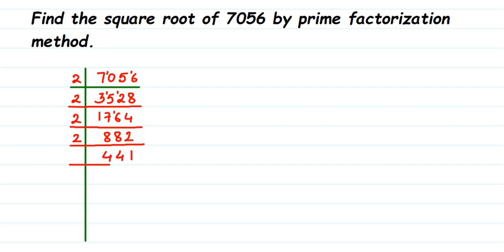Now 441 is an odd number, so we try dividing by 3. 3 × 1 = 3, remainder 1, making 14; 3 × 4 = 12, remainder 2, making 21; 3 × 7 = 21. We get 147.